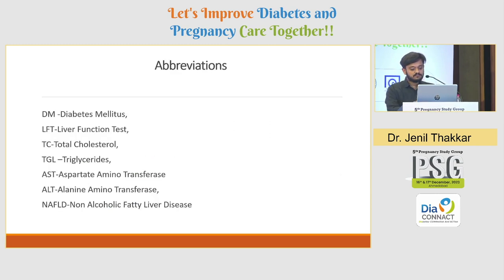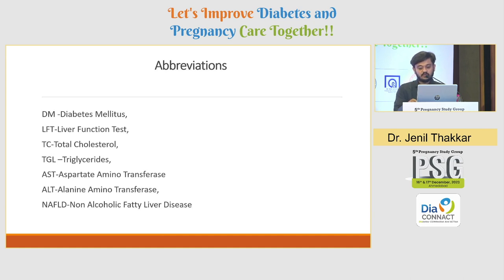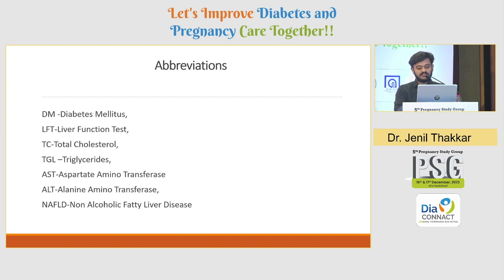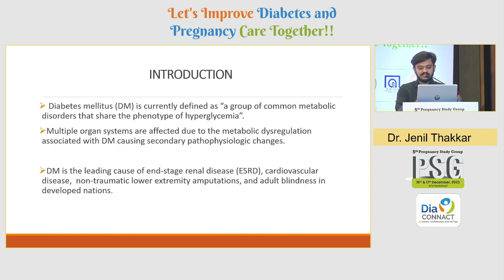I have used a few abbreviations during the course of my paper to make it more convenient. DM means diabetes mellitus, LFT is liver function test, TC is total cholesterol, TGL is triglycerides, AST and ALT we all know, and NAFLD is non-alcoholic fatty liver disease.